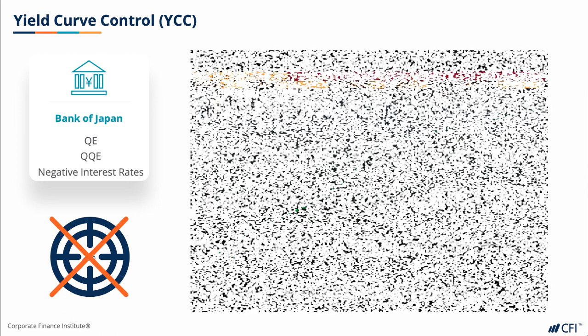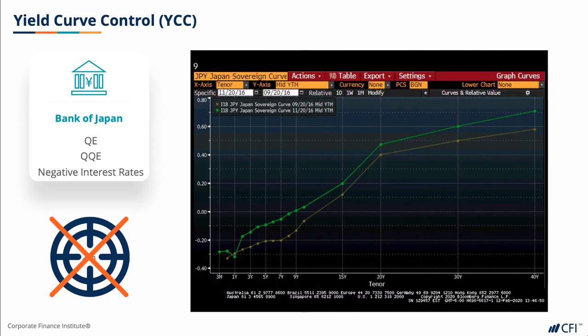Hence, they wanted to directly affect the price of the 10-year JGBs by purchasing or selling JGBs across the curve to have a bond yield of more or less around 0%. The amount of purchases was to remain at about 80 trillion Japanese yen under QQE, but targeting the 0% level in 10-year JGBs. The reason they wanted the 0% level was to shift people's deflationary mindset as a result of negative interest rates and to keep longer-term interest rates from going more negative.